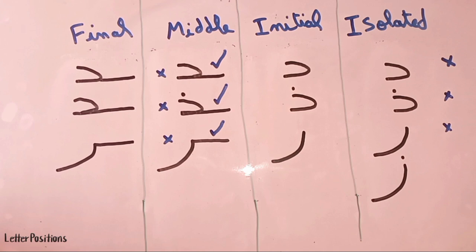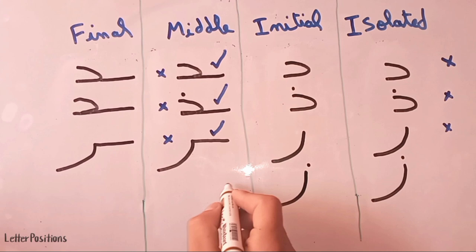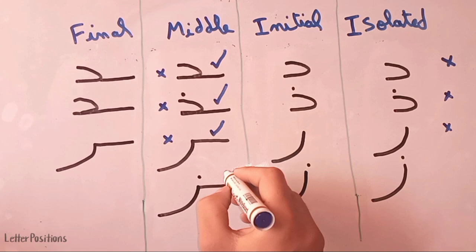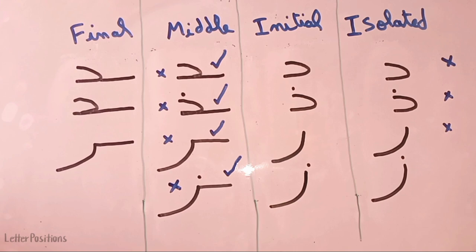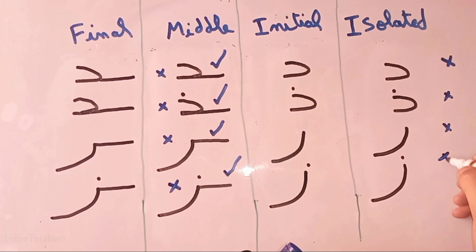The next letter is harfu al-zay. This is the isolated form, and the initial form is still the same. In the middle form, we can connect it with the right side but cannot connect with the left side. This is the final form of the letter al-zay. We put a cross next to it to indicate it cannot connect on the left.